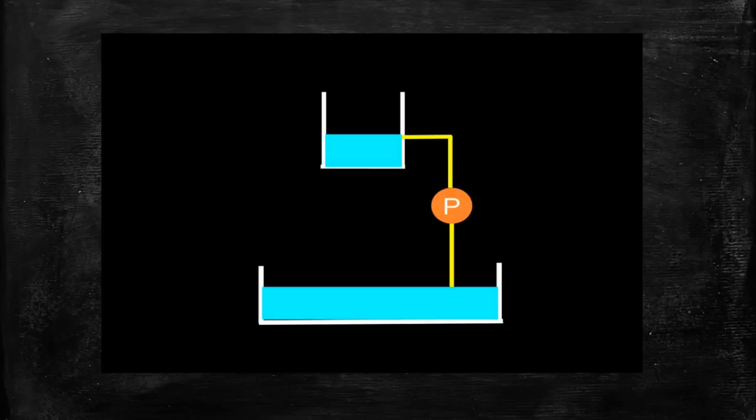To understand the concept of voltage and current we will consider this analogy of water so that it will help you understand the concepts more clearly. Here we have two water tanks, first is on the upper level and second is on the lower level. Now I have to pump this water from the lower level to the upper level, so for that purpose I connected a pump here with the pipe.